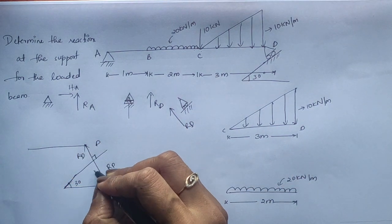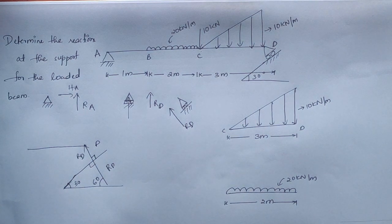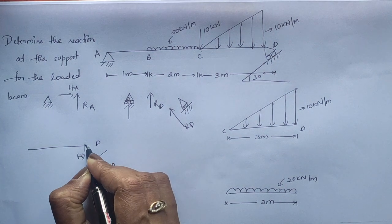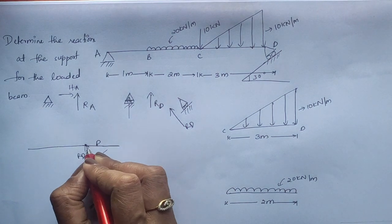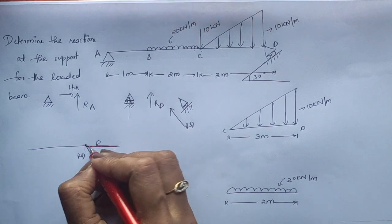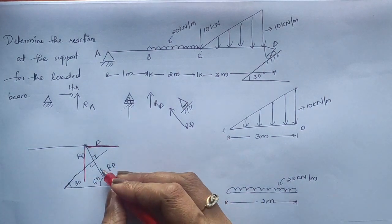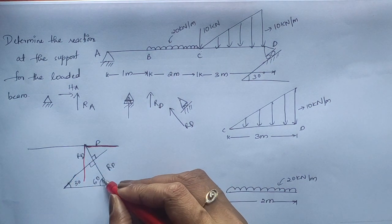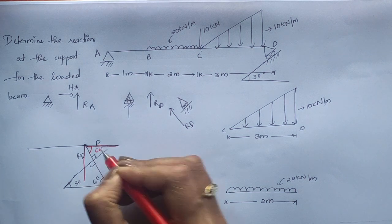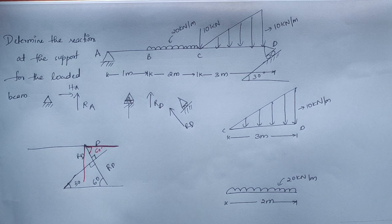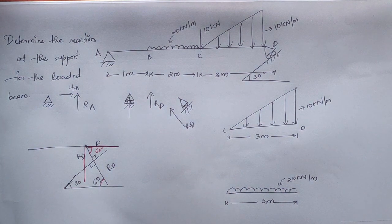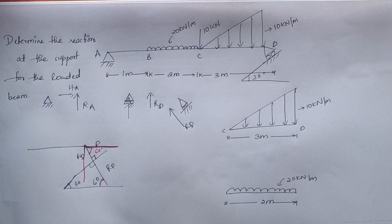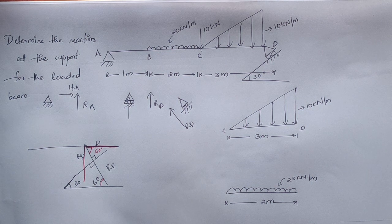Since the inclined plane is at 30 degrees and the reaction RD is perpendicular to it, the reaction makes an angle of 60 degrees with the x-axis. Using alternate angles, we confirm this is 60 degrees. Knowing this angle makes it straightforward when drawing the FBD and resolving RD into components.